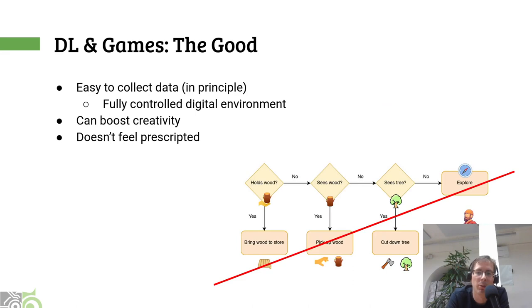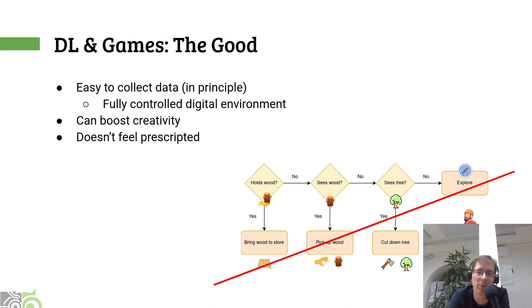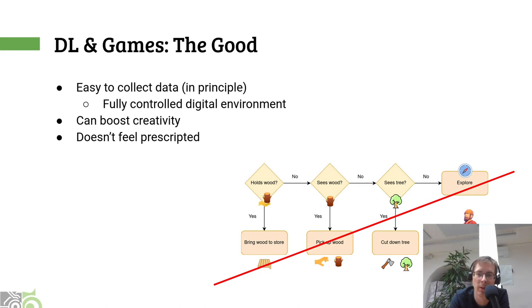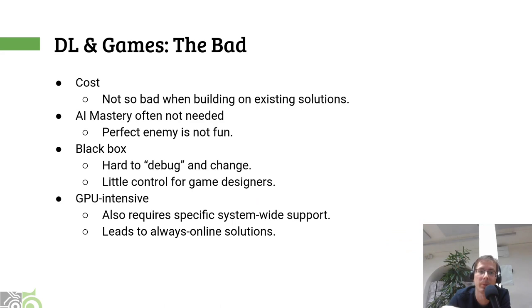Now let's talk about some fundamental aspects of deep learning and how it's connected to games. Let's start with the good things. First of all, games are typically what I've described here as a fully controlled digital environment. That means you can actually collect data quite easily because you have a game world — you know exactly what each object is, what is its meaning, everything is very well defined. If somebody walks there and does some things, you can easily record what's going on. And I believe deep learning in general can be quite creative — we will see some examples later on. And it just doesn't feel prescripted, as I have just tried to show you. That's actually quite big, in my opinion.